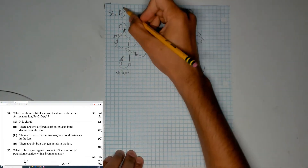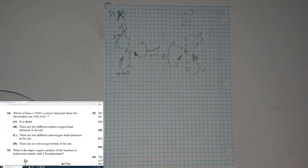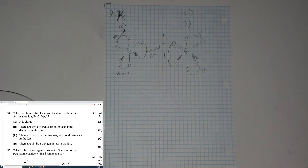So statement A is correct — you can cross it out. Now for the carbon-oxygen bonds: since it's an ion with resonance stabilization, oxalate has multiple resonance forms, meaning all bond lengths are the same. It may look different when you write Lewis structures, but in reality the molecule is a blend of resonance structures, so all C-O bonds are equivalent. Cross out B.